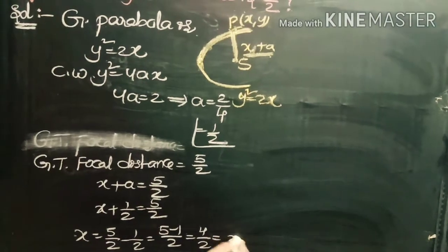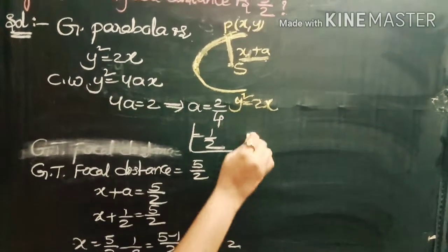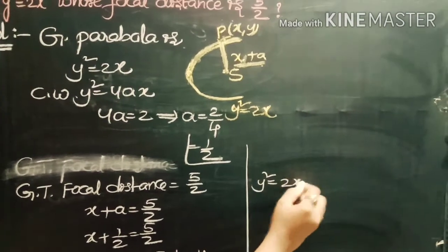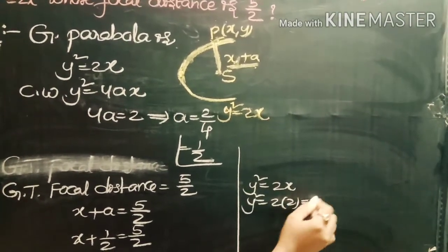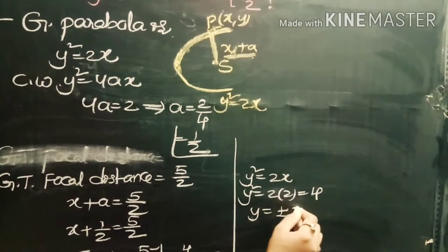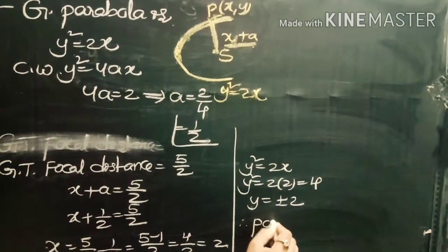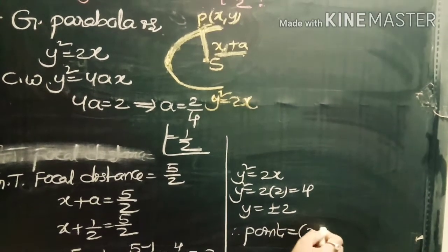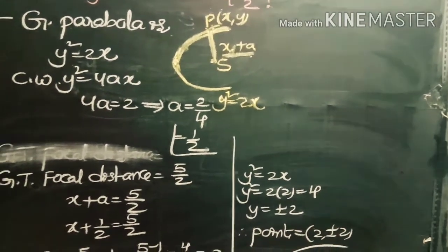Substituting x = 2 into the parabola equation y² = 2x: y² = 2(2) = 4, so y = ±2. Therefore the required points on the parabola are (2, 2) and (2, −2), i.e., (2, ±2).